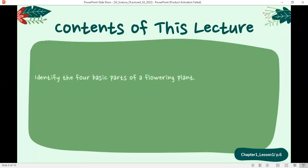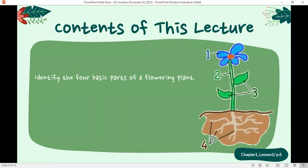So what are the four basic parts of a flowering plant? It has a flower. Here we have the blue flower. The stem supporting the plant. The leaves that help the plant to take sunlight. And the roots hidden in the soil that help the plant to take water and minerals from the soil.